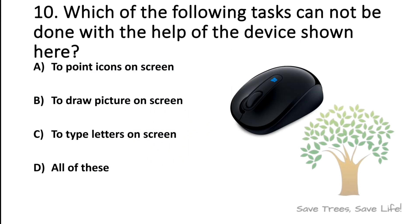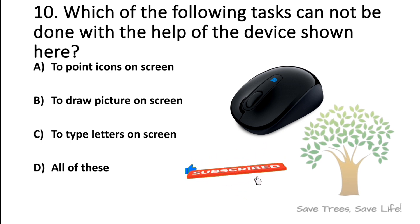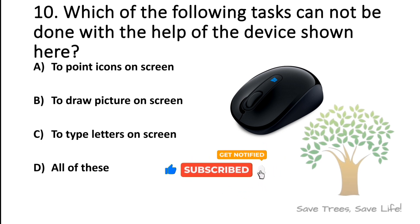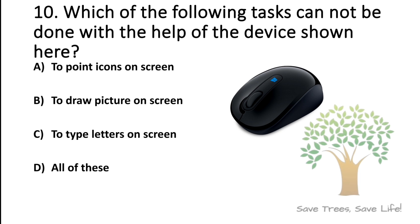Question number 10. Which of the following tasks cannot be done with the help of the device shown here? Option A: To point icons on the screen, Option B: To draw pictures on screen, Option C: To type letters on screen, Option D: All of these. So the answer is Option C: To type letters on screen.